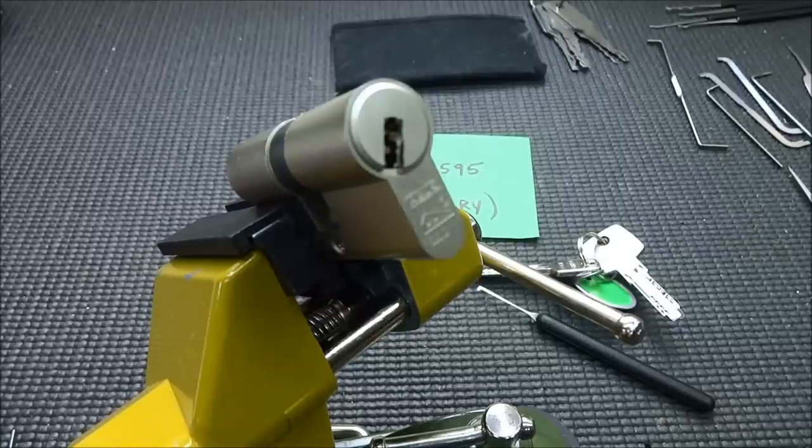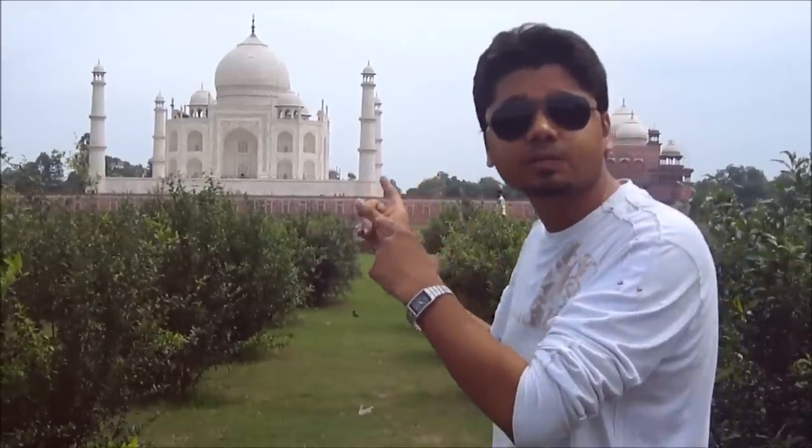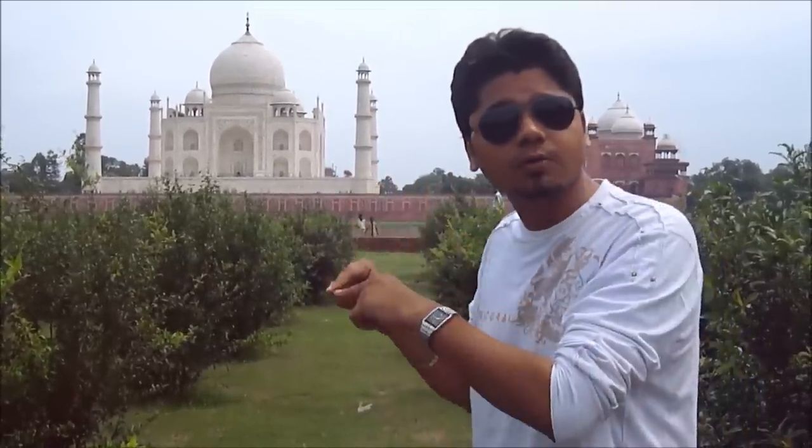Late last night, an intruder stole all the ancient locks from the famous Taj Mahal. The only clue was spray painted on the wall, the words 'Bosnian Bill'. If you know what this means or who may have stolen the locks, please contact us. Thank you.